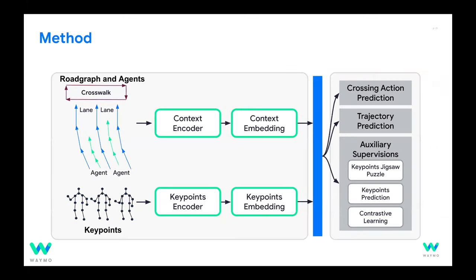The general architecture has road graph and agent information fed into a context encoder to generate context embeddings in vectorized space. We also encode a sequence of keypoints into keypoint embeddings. Together, these generate crossing action predictions and trajectory predictions, supported by auxiliary losses.